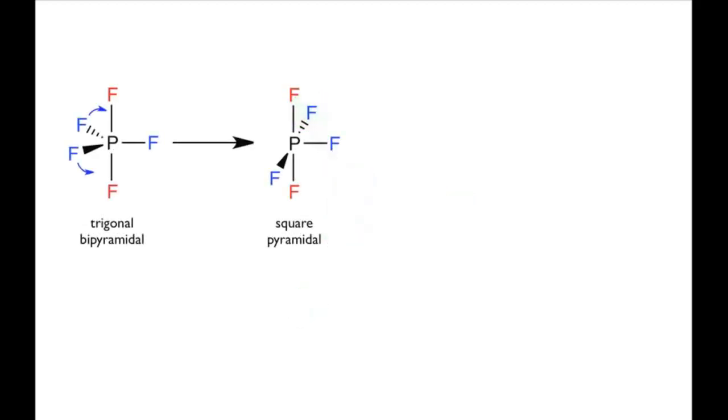This interconversion provides a means of scrambling the axial and the equatorial fluorine atoms in a trigonal bipyramid, so that each fluorine atom spends two-fifths of its time in an axial position, and three-fifths of its time in an equatorial position.